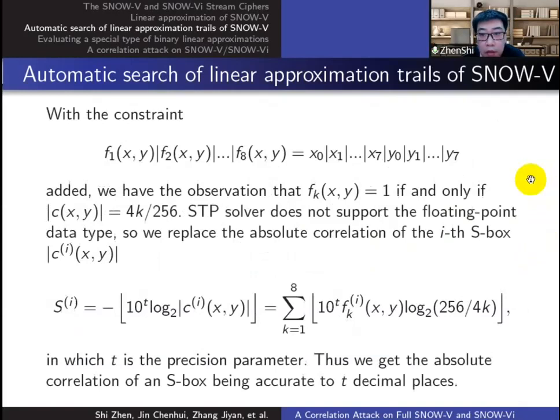We can see that fk equals one if and only if the corresponding absolute correlation equals four times k divided by 256. As the STP solver does not support the floating point data type, we also use the parameter t to adjust its accuracy.